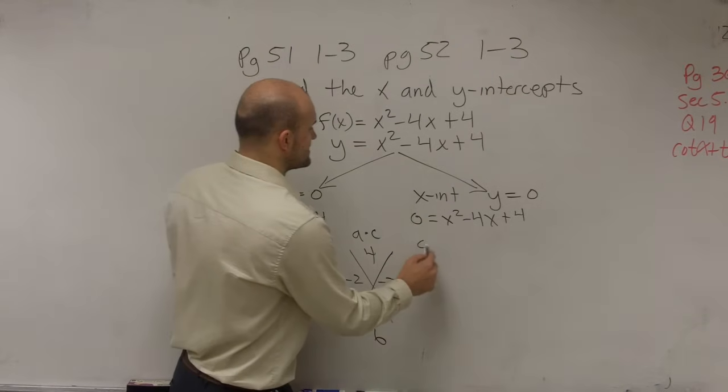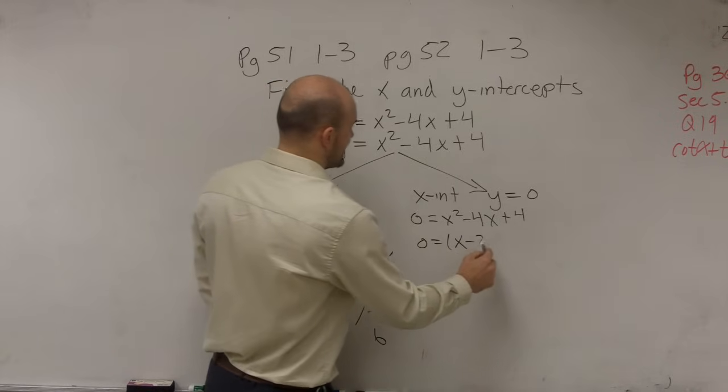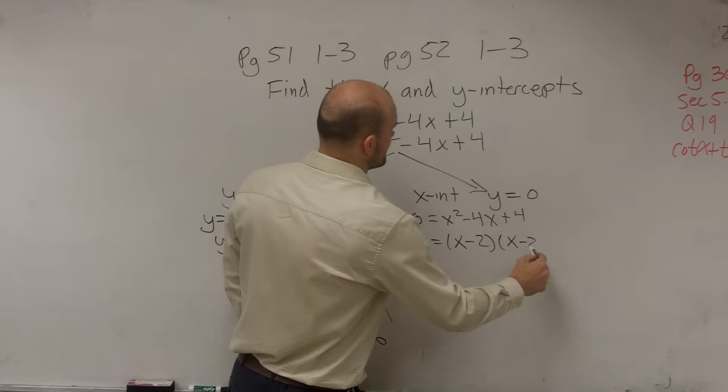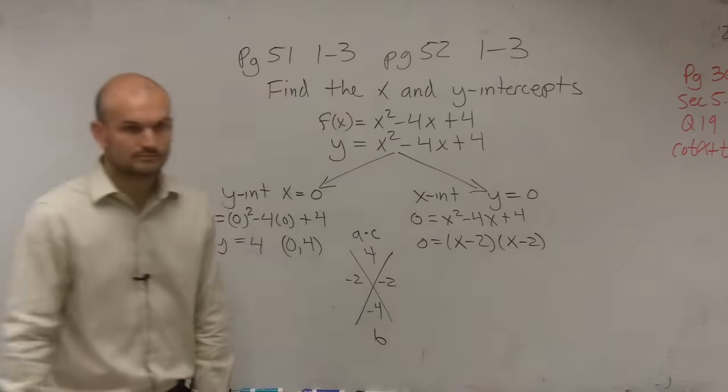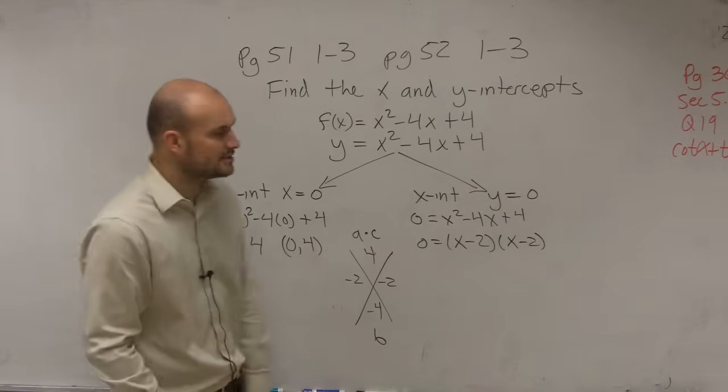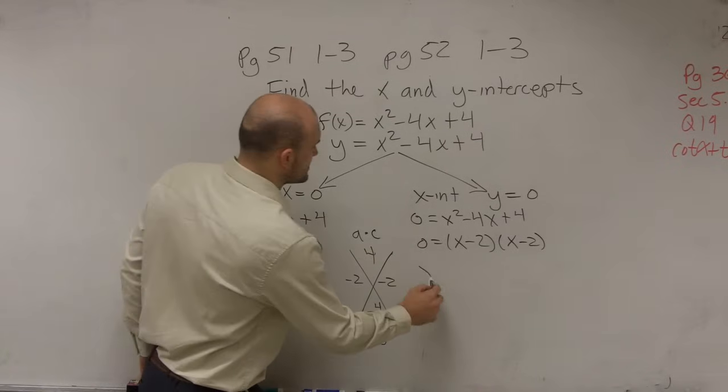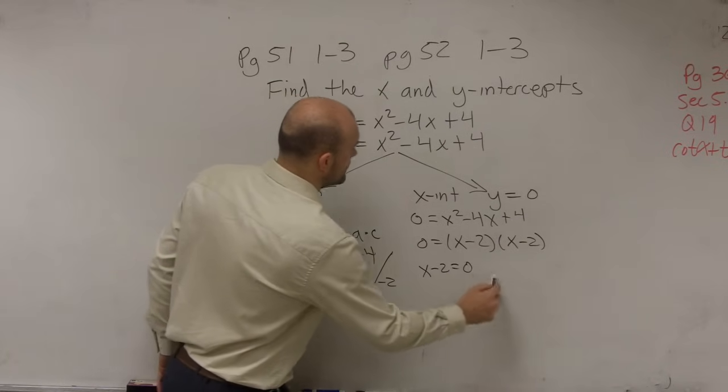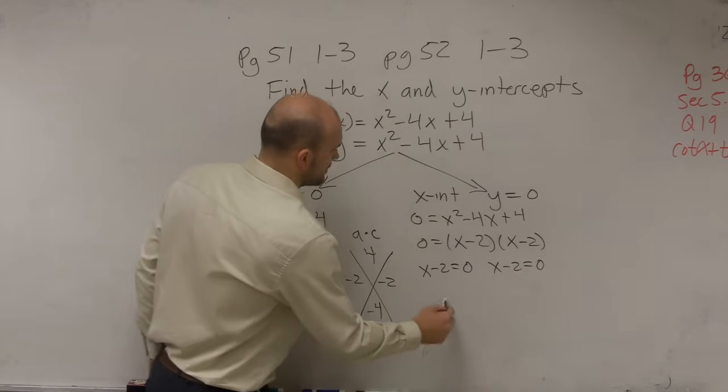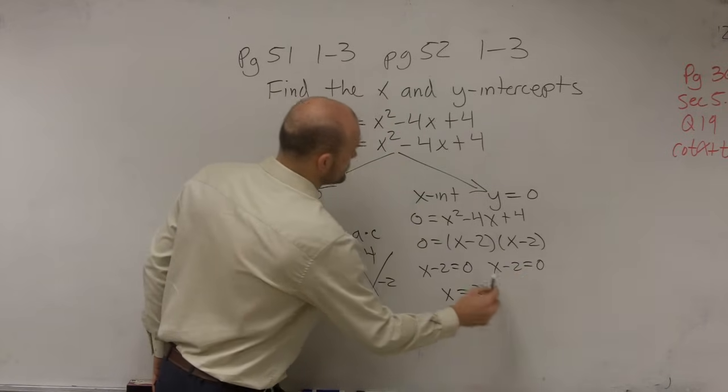Therefore, you could say 0 = (x - 2)(x - 2). By applying the zero product property, we can say x - 2 = 0, and x - 2 = 0. Therefore, x equals 2.